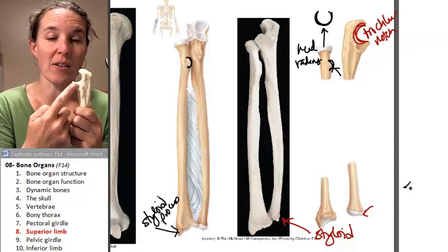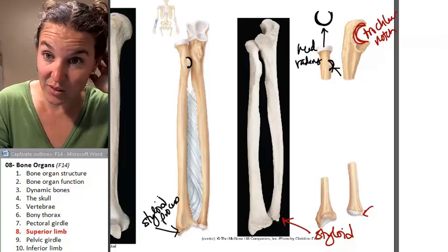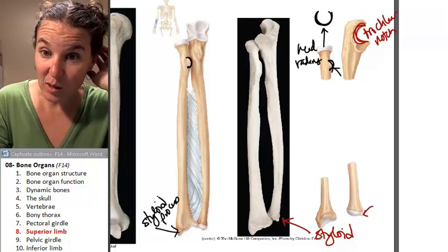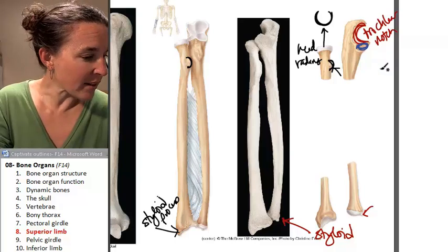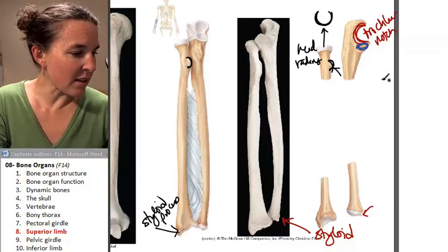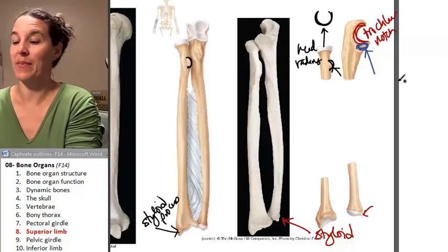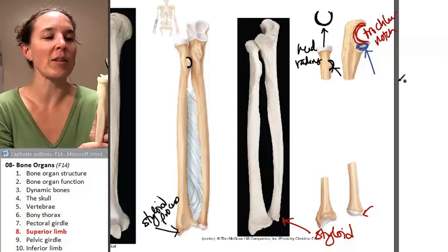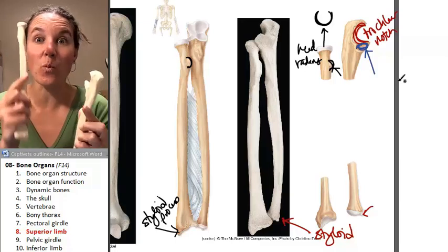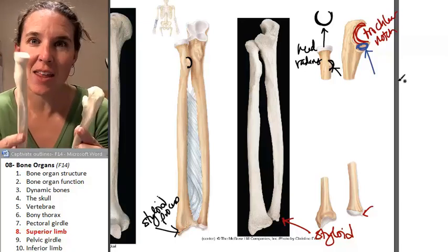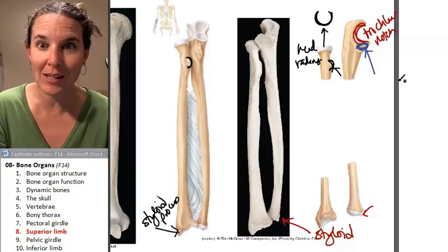There's a little notch here on the ulna approximately at the proximal end. The head of the radius fits right into that little notch, which is why it's called the radial notch.